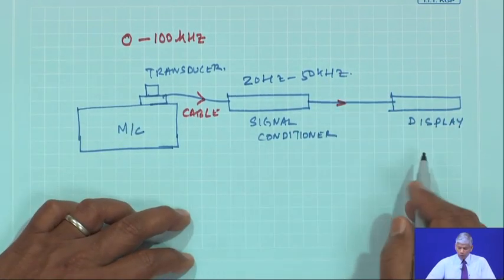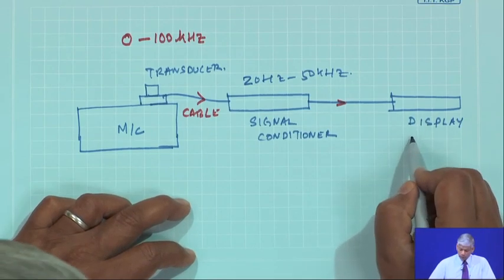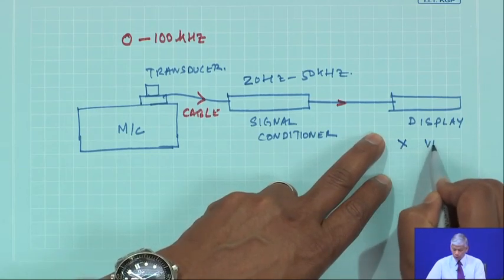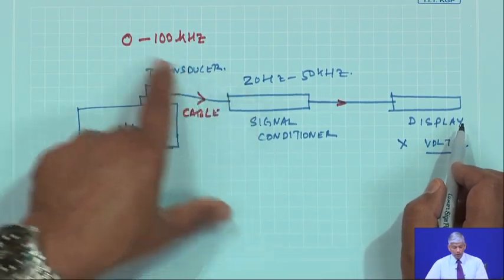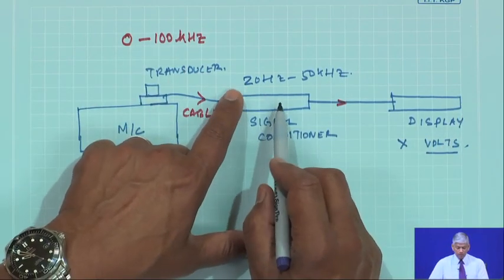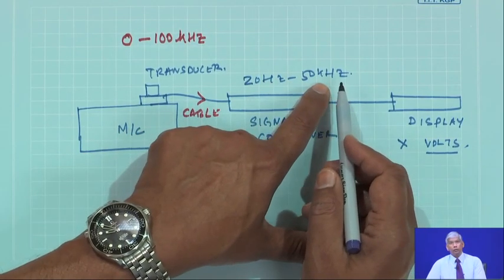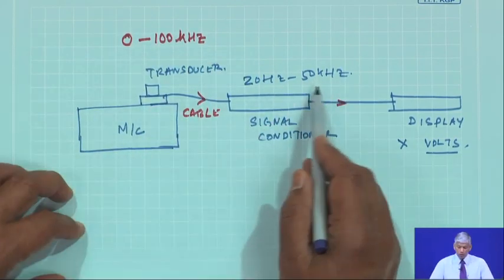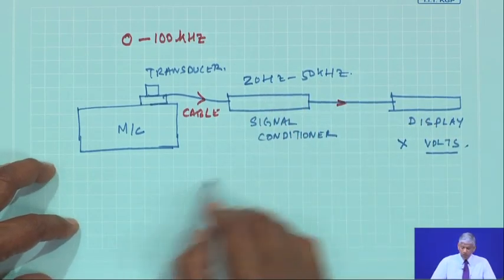Obviously you would be asking: when I see a value on the display, I cannot say that whatever value I get in x volts is from 0 to 100 kHz, because the signal conditioner is not going to respond to anything below 20 Hz or above 50 kHz. You may be having values from 50 kHz to 100 kHz, but those would not get propagated because the signal conditioner has a limitation.